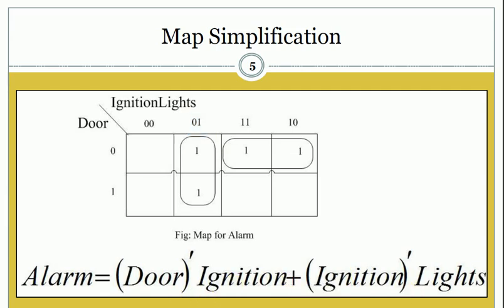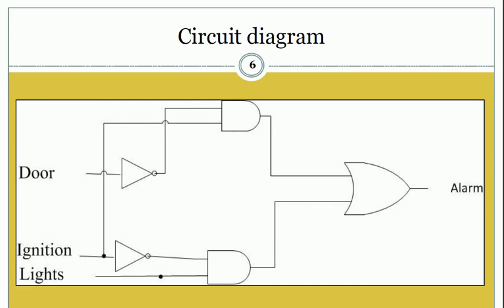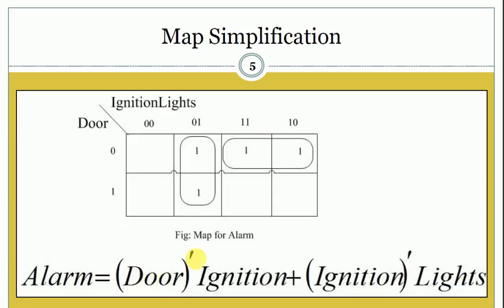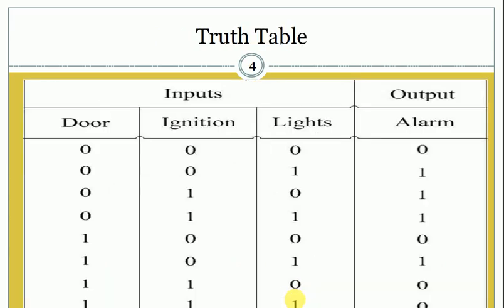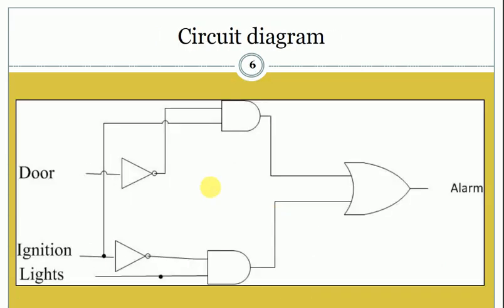After getting the equation, we will draw the circuit diagram. We have door prime · ignition, so first we design door prime and then door prime · ignition. The other term is ignition prime · lights. Both terms go into an OR gate, and this is the final output alarm.